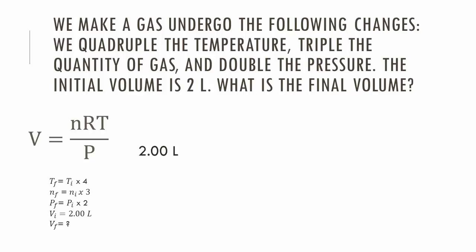We start with 2 liters of gas. Since the temperature is proportional to the volume, we must quadruple the 2 liters of gas. The number of moles is also proportional to the volume, so we multiply it by 3. The pressure is inversely proportional to the volume, so we have to divide it by 2 and we get a final answer of 12 liters.